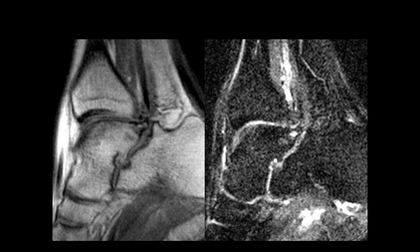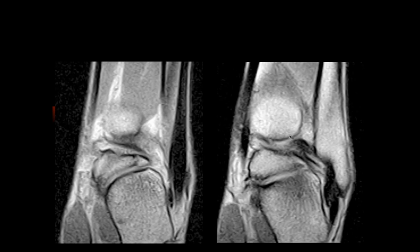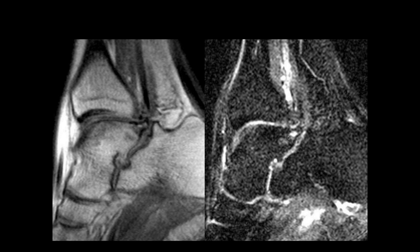Here we can also see a steta process with osteophytosis between the posterior talus and the calcaneus — compatible with posterior impingement with quite abnormal articulation. This is someone in a small extremity scanner where the foot has to be plantar-flexed, showing the position where impingement occurs, with bone edema here.